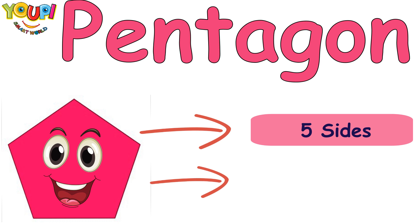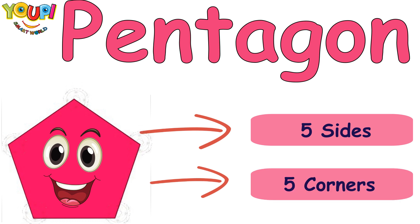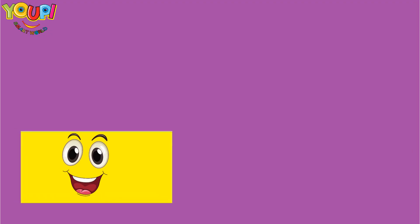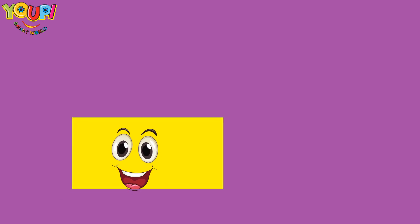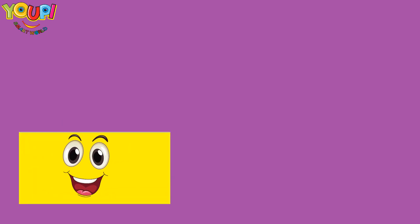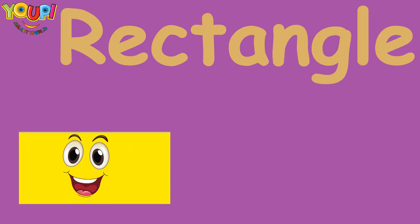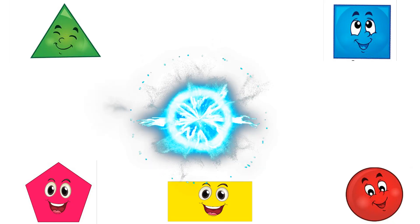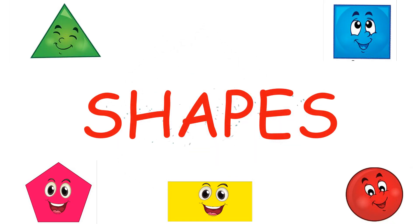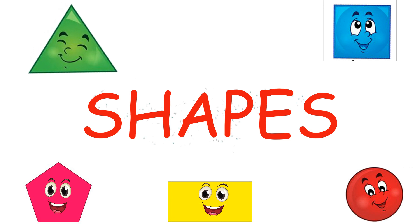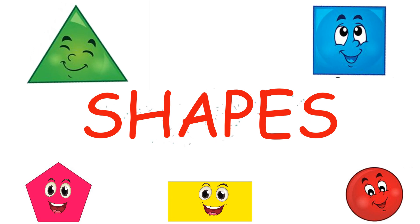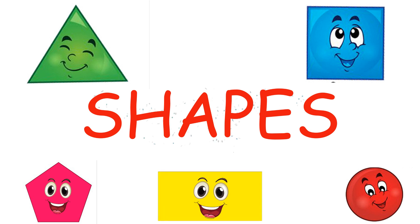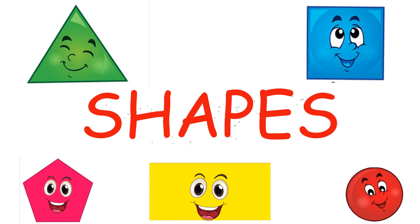It has five sides and five corners. What shape is this? What's the name of this shape? That's right, it's a rectangle! It has four sides and four corners. We are the shapes — triangle, square, rectangle, pentagon, circle!